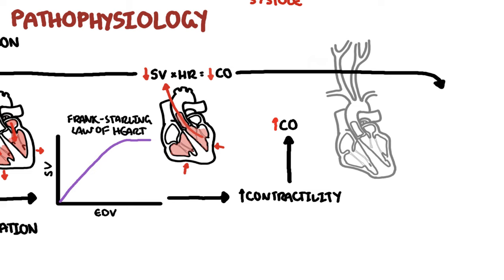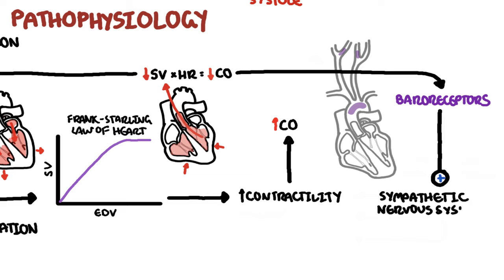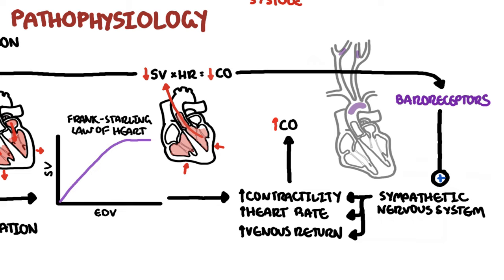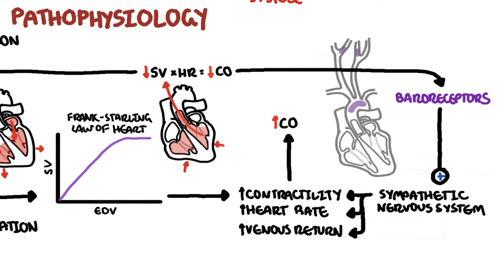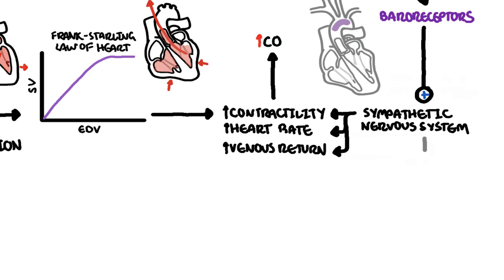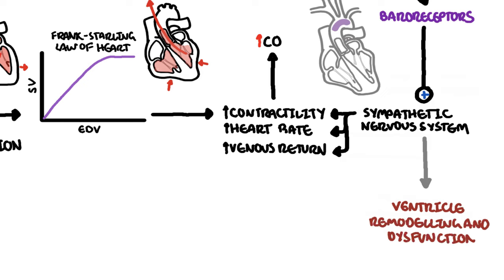Reduced cardiac output is also picked up by the baroreceptors, which detect this and will activate the sympathetic nervous system. The sympathetic nervous system will stimulate myocardial contractility, increase heart rate, and venous tone to increase cardiac output. Although these adaptations are designed to increase cardiac output, they may themselves be troublesome – sympathetic activation long term contributes to adverse ventricular remodeling and progressive ventricular dysfunction.